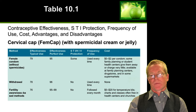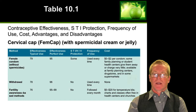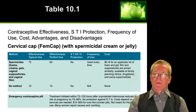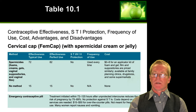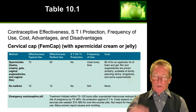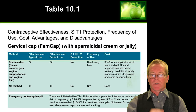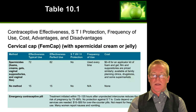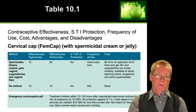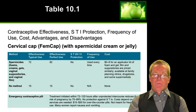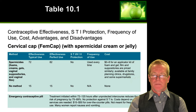Withdrawal is not particularly effective at preventing pregnancy and has no protection against sexually transmitted diseases or HIV. Spermicides, foams, and gels have quite low typical effectiveness and do not provide protection against sexually transmitted diseases and HIV. The emergency contraceptive pill can be used within 72 to 120 hours after unprotected intercourse and will reduce the risk of pregnancy by 75 to 89 percent, but does not provide any protection against sexually transmitted diseases. In California it is available over the counter at many pharmacies.